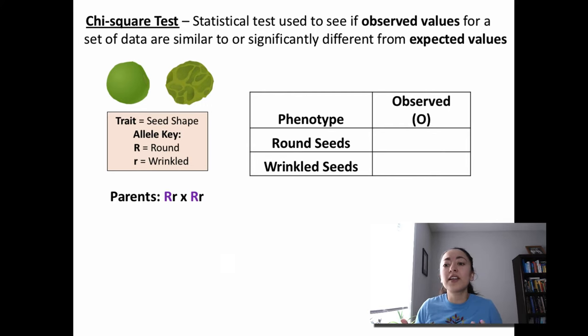Let's say we counted 5,474 round seeds and 1,850 wrinkled seeds in the offspring. These counts would be our observed values because they are the actual numbers that we saw or in other words, observed.